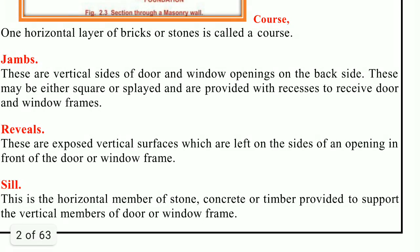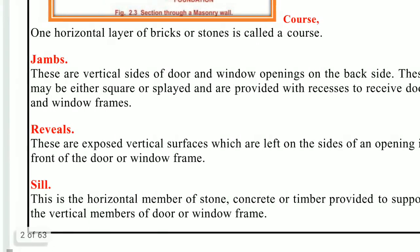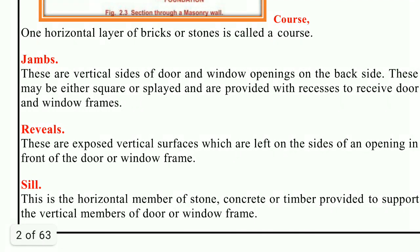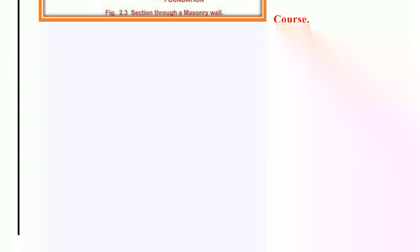This is called throating. Next is plinth. The projecting course at ground floor level is known as the plinth. It is also used to indicate the height of ground floor level. The plinth course protects the interior of the building from rainwater. It is sometimes molded and given ornamental treatment, and the offset at plinth level is sometimes omitted for architectural purposes.